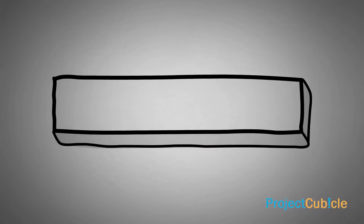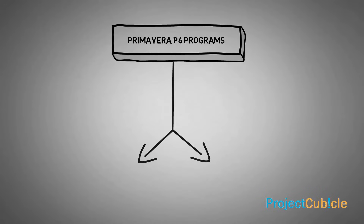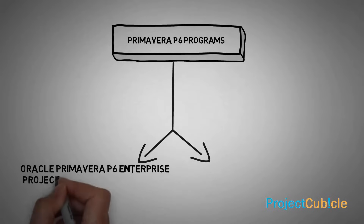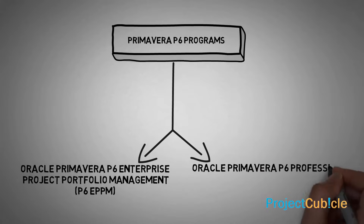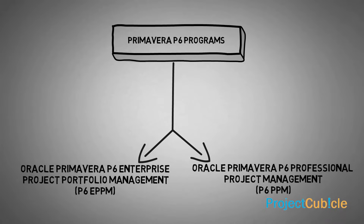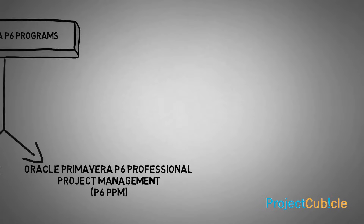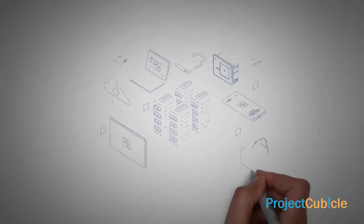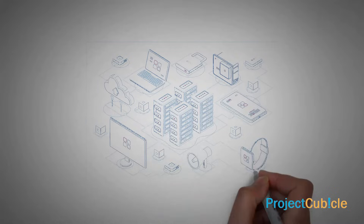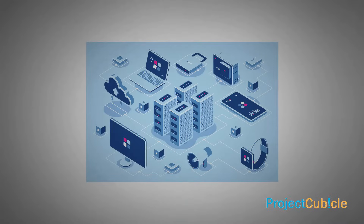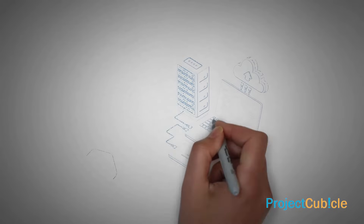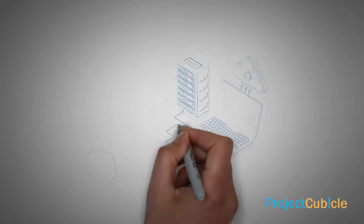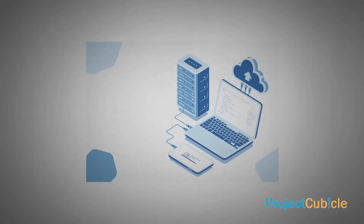There are two Primavera P6 programs: Oracle Primavera P6 Enterprise Project Portfolio Management and Oracle Primavera P6 Professional Project Management. Primavera P6 Professional Project Management is a standalone Windows-based software tool that requires a local or server-based database. Primavera P6 Enterprise Project Portfolio Management is a web-based product that connects to a web server to operate.